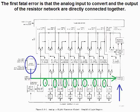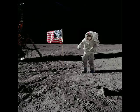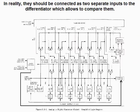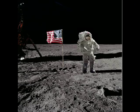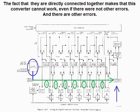The first fatal error is that the analog input and the output of the resistor network are directly connected together. In reality, they should be connected as two separate inputs to the differentiator, which allows comparing them. The fact that they are directly connected together makes this converter unable to work, even if there were no other errors. And there are other errors.